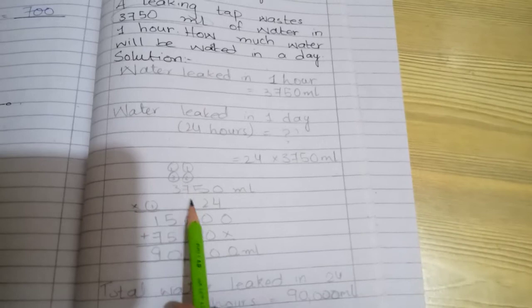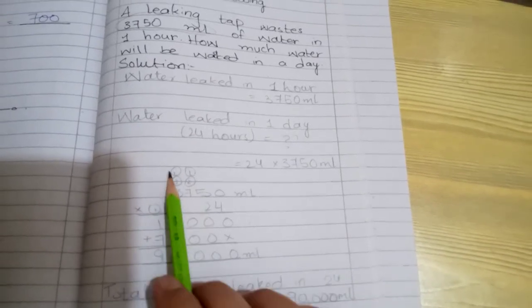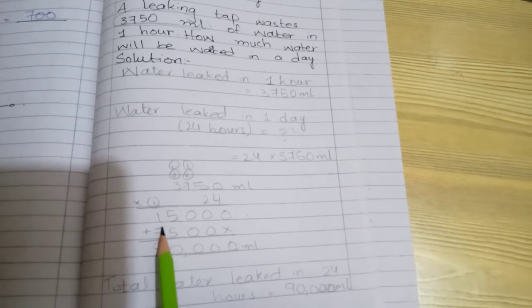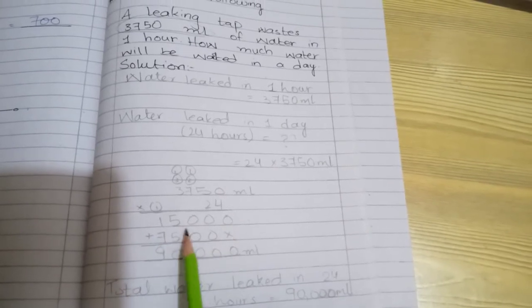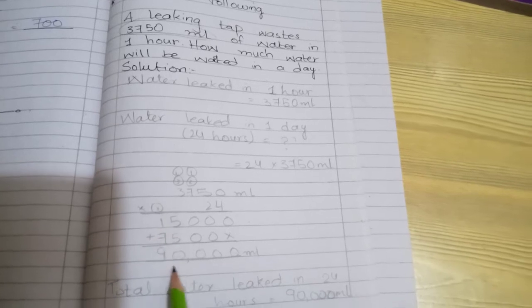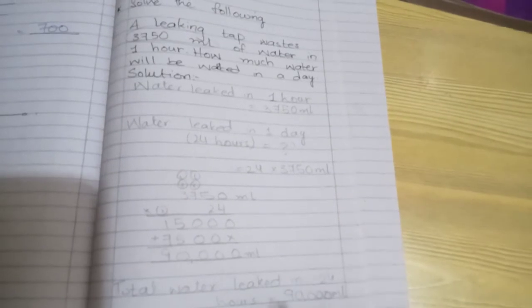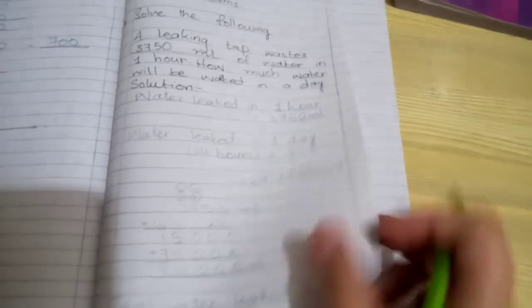Performing the multiplication calculation: Total water leaked in 24 hours equals 90,000 milliliters.